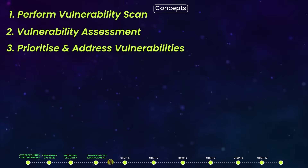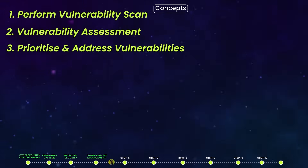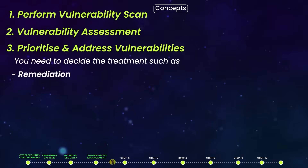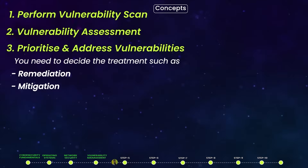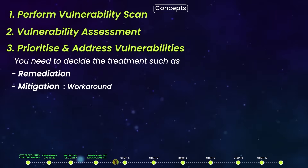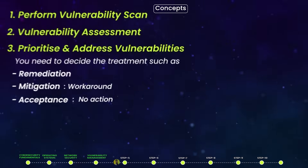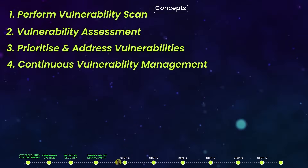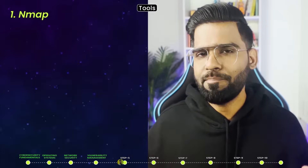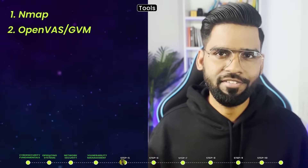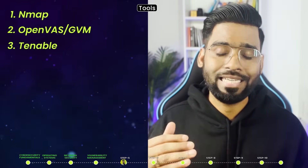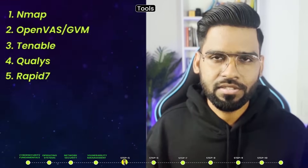Prioritize and address vulnerabilities based on risk assessment. Decide on treatment: remediation (ask the system admin to perform patch management), mitigation (a workaround solution), or acceptance (taking no action, decided based on multiple factors). Finally, perform continuous vulnerability management proactively. Tools include Nmap (open source, used for network scanning), OpenVAS or GVM, and commercial tools such as Tenable, Qualys, or Rapid7.